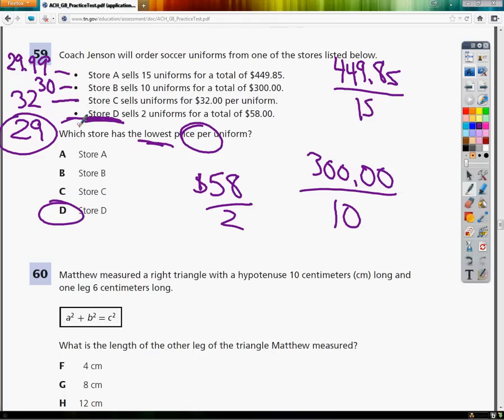Anytime you have the per in there, divide the total by the individual number of things. And then you can make your comparison. Don't just immediately pick the one that's 32 because it's the smallest number at first.